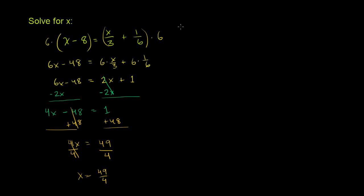So we have x minus 8. So we have 49 over 4 minus 8 should be equal to 49 over 4 over 3 plus 1 over 6. So let's see what we can do here. Well, like we did before, we can multiply both sides of this equation by 6.